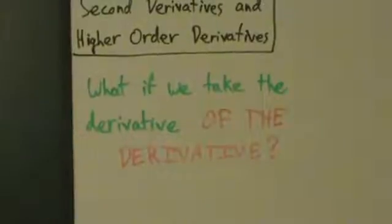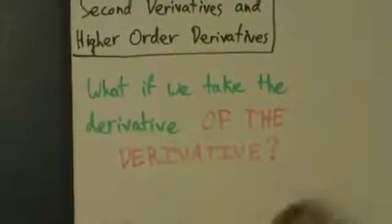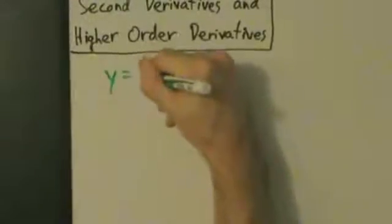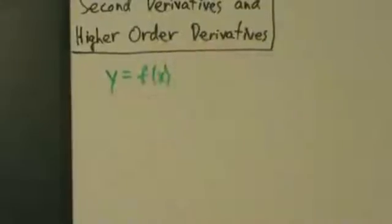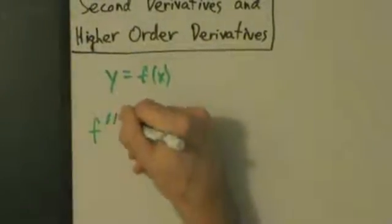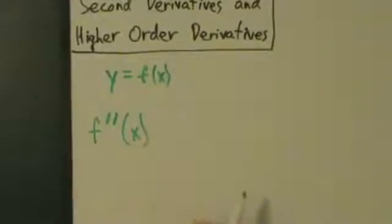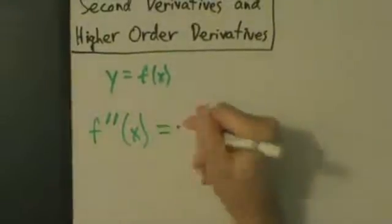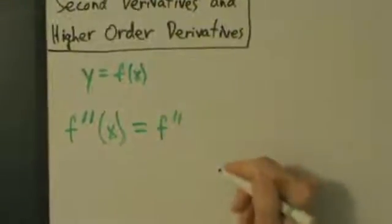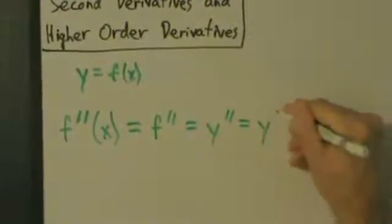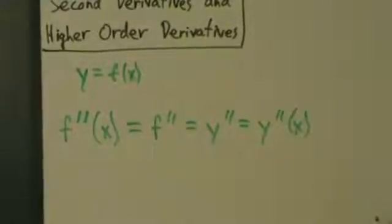Let's talk about some notation. If we have a function y equals f of x, for the first derivative it's just f prime of x. For the second derivative, we tack on another prime — so this is f double prime of x. This is the same as f double prime without the x, or y double prime, or y double prime of x.